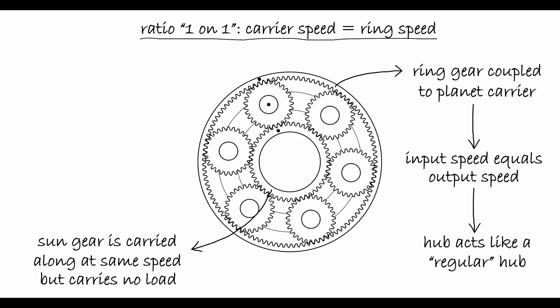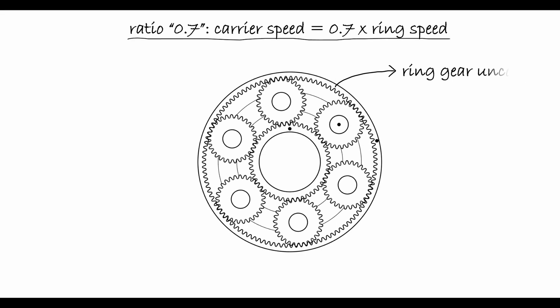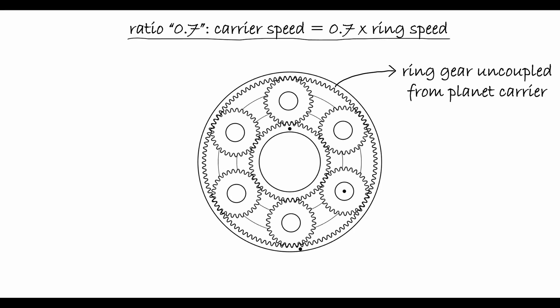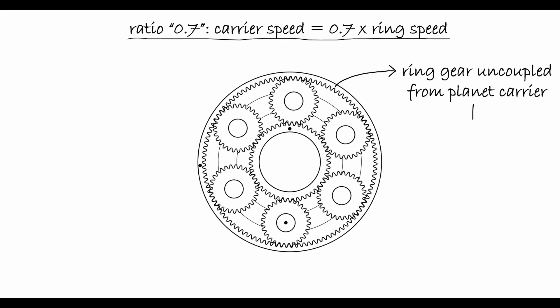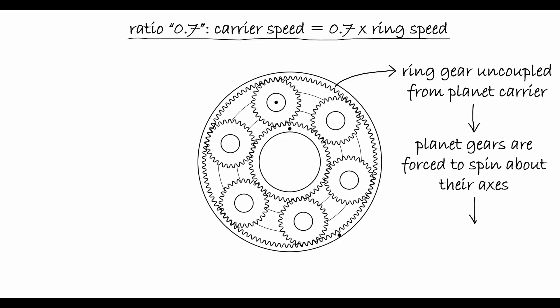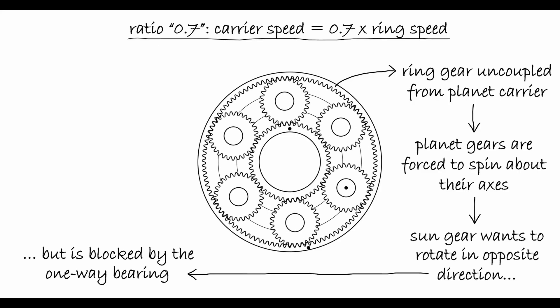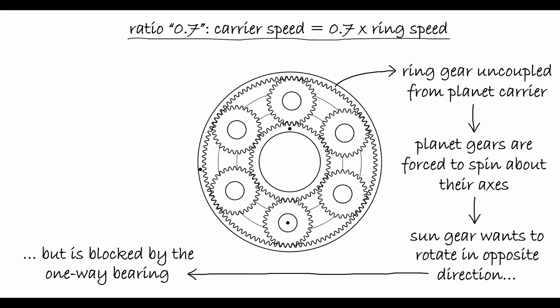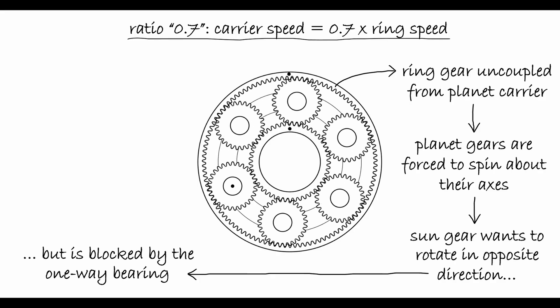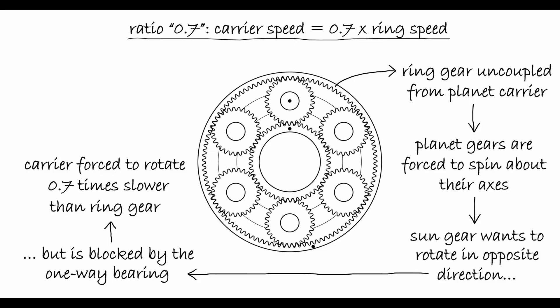When the clutch mechanism disengages, the ring gear and planet carrier are uncoupled, and any speed difference between these two forces the planet gears to spin about their axes. In doing so, the sun gear will want to rotate in the opposite direction, but is blocked by the one-way bearing. The planet gears thus have to orbit the stationary sun gear, which they do at a velocity that is approximately 0.7 times smaller than the ring gear's velocity.